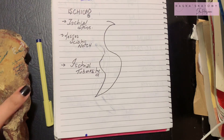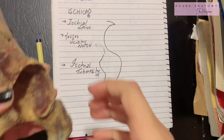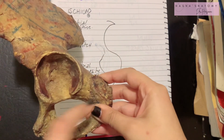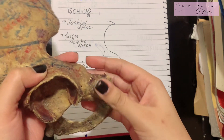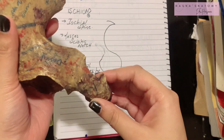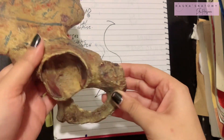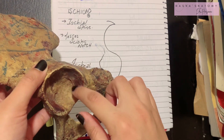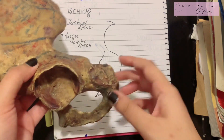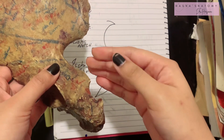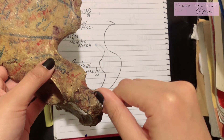Assalamu alaikum, this is Dr. Hasna, and today we'll study the posture inferior to the acetabular bone which is known as the ischium. The ischium is forming two-fifths of the acetabulum and has an upper end and a lower end.